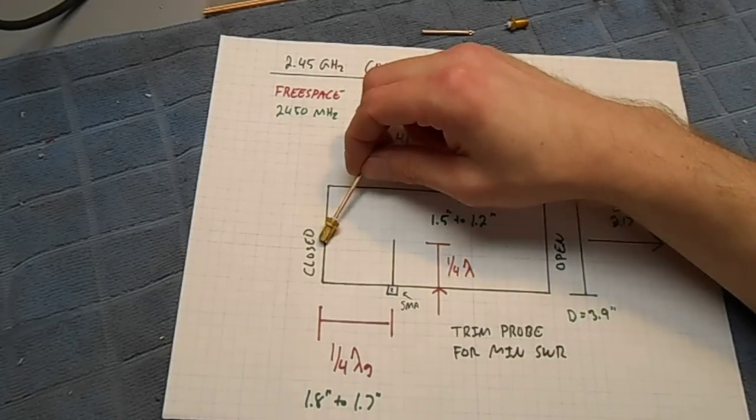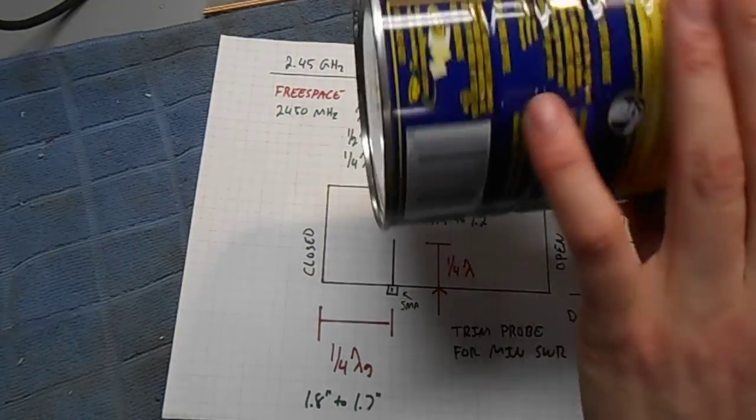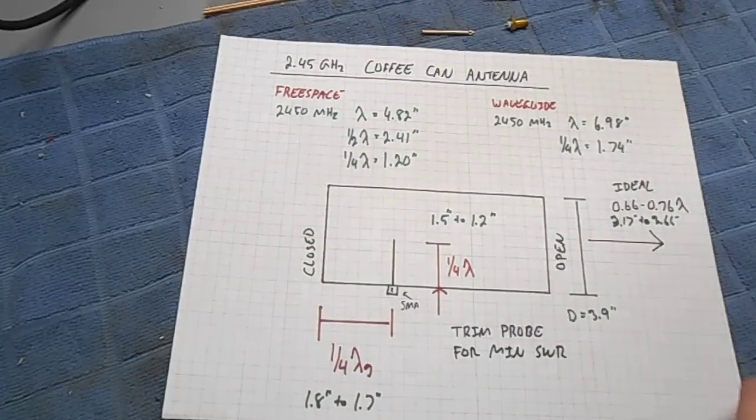From the closed end of the coffee can to the probe antenna, there'll be 1 quarter waveguide wavelength, which is going to be approximately 1.8 to 1.7 inches.